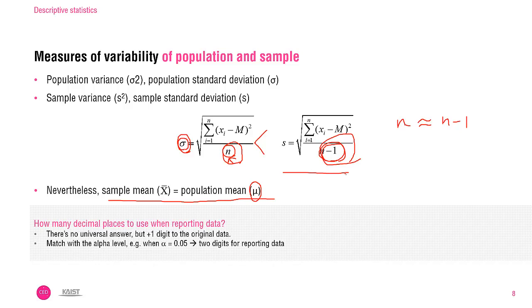By the way, when we run the descriptive analysis in software, we receive many decimal points. Then how many decimal places are necessary? There is no universal answer. But one rule of thumb is that one additional digit in comparison to the original data. The other suggestion is to match with the alpha level. For example, if you set your significance level at 0.05, which means your criteria is 95%, you can apply two digits also for describing the other data. Usually in design studies, we set the alpha level at 0.05. In this case, more than two decimal places are not necessary.